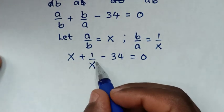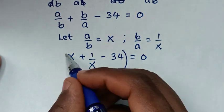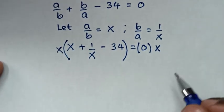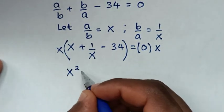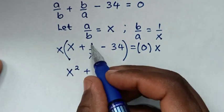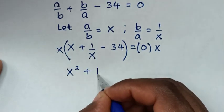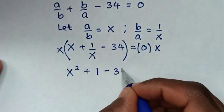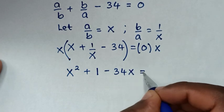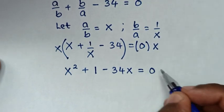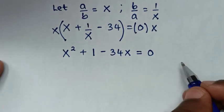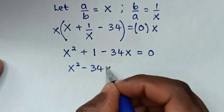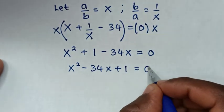Then to remove the denominator x, we will multiply by x on both sides. So x times x is x squared, plus x times 1 over x, x cancels, so it will be plus 1. Then x times negative 34 is negative 34x, is equal to 0. So we have x squared minus 34x plus 1 is equal to 0.